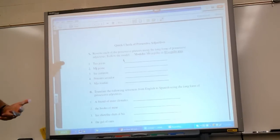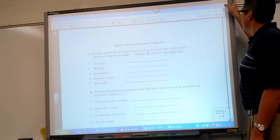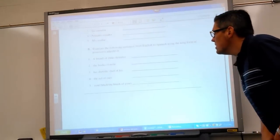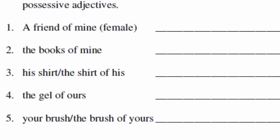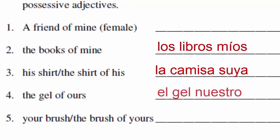So there's a glance at switching from one form of Spanish to another. Let's try taking some things we do say in English and flipping them into Spanish. A friend of mine — una amiga mía. The books of mine — los libros míos. His shirt, or the shirt of his — la camisa suya. The gel of ours — el gel nuestro. Your brush, or the brush of yours — el cepillo suyo.